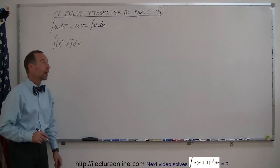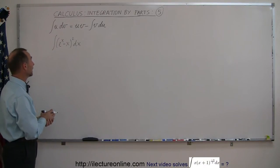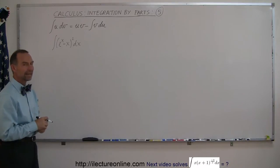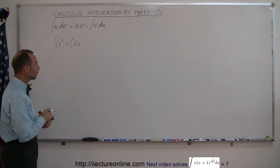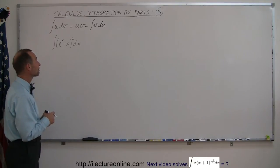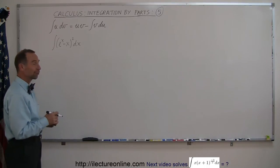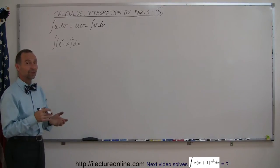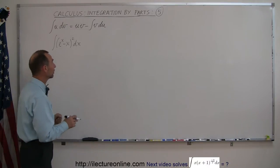Here's example number five of how to integrate by parts this particular integral: e to the x minus x, quantity squared, times dx. The trick about this one is to figure out what's going to be your u and what's going to be your dv. You may want to try a couple of times and get frustrated because the first couple of times nothing may work, but the trick to this particular one is as follows.